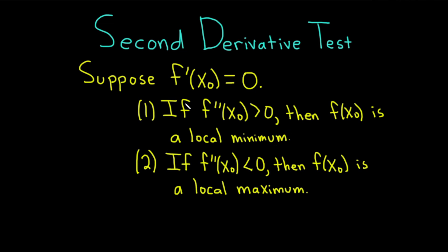Let's briefly try to make sense of these statements. Our first derivative is equal to 0, which basically means we have a horizontal tangent line at x0. For condition 1 to be true, the concavity must be positive, because the second derivative is positive at a number when the function is concave up at that number. So putting those two together, the graph should look roughly like a cup shape at x0, giving you a local minimum.